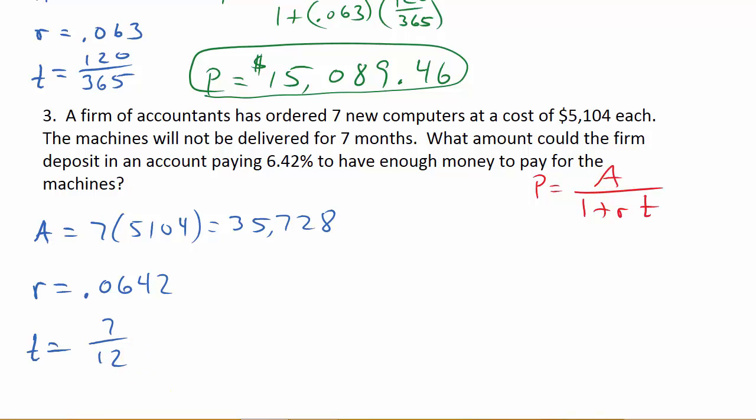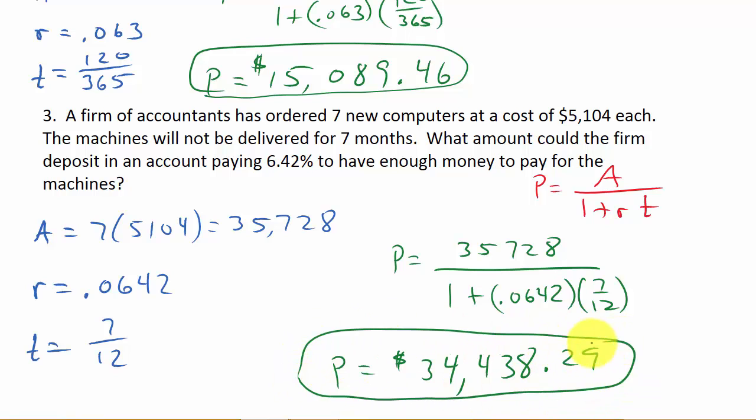Alright, so now we have everything. So let's plug it in. So I have P is equal to A, 35,728, over 1 plus R, which is 0.0642, times T, the 7 over 12. And so P is equal to, okay, so let's pause it and see if you can punch it into the calculator and get the right answer. And then once you get the answer, play it. Alright, so we've got 0.0642 times 7, equals, divided by 12, equals, plus 1, equals. And then we've got 35,728, divided by, and recall the answer. So that's going to be $34,438.29. And there's your answer.